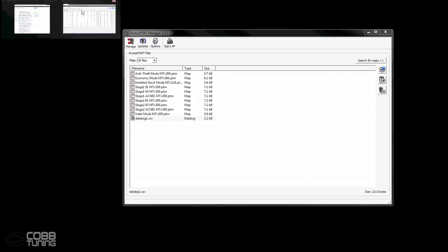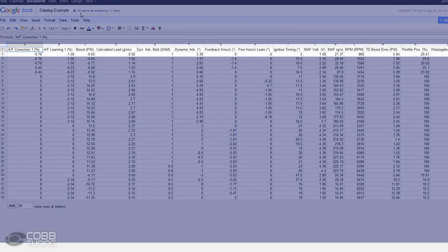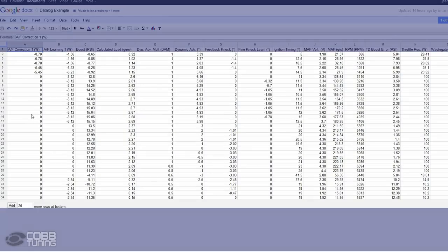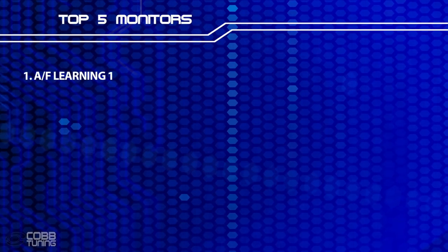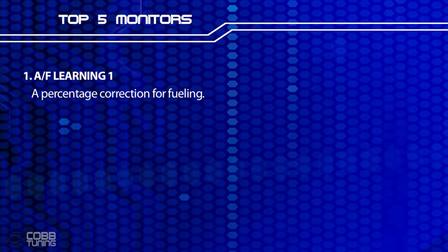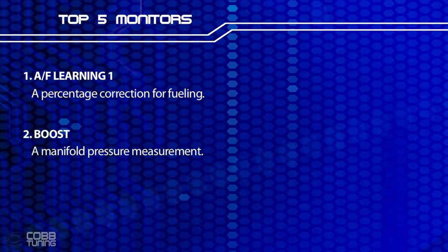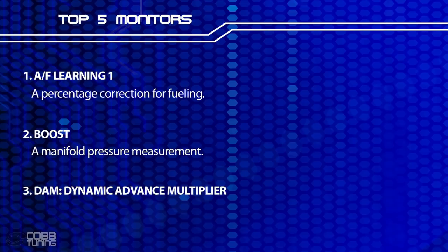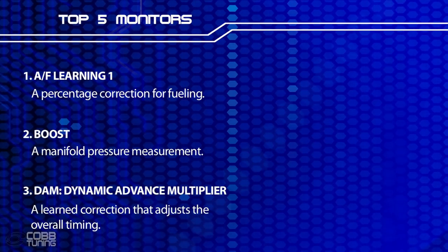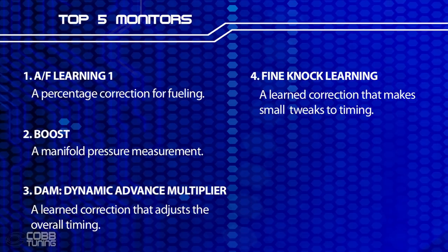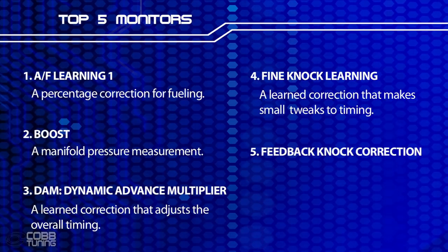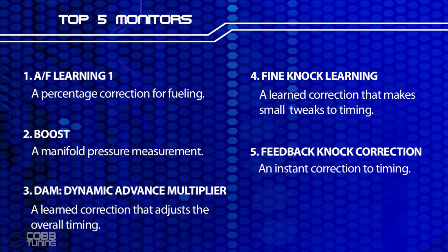Here's an overview of what the log will look like. On the very top we have the monitor names, and then below that is the data that you recorded in sequential order. The five monitors we'll be looking at are: 1. AF Learning 1 — a percentage correction for fueling; 2. Boost — a manifold pressure measurement; 3. DAM or Dynamic Advanced Multiplier — a learn correction that adjusts the overall timing; 4. Fine Knock Learning — a learn correction that makes small tweaks to timing; 5. Feedback Knock Correction — an instant correction to timing.